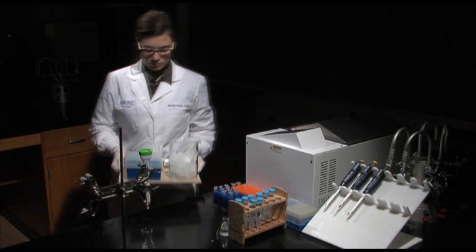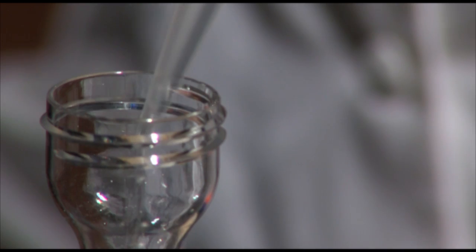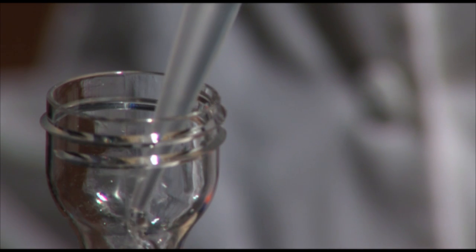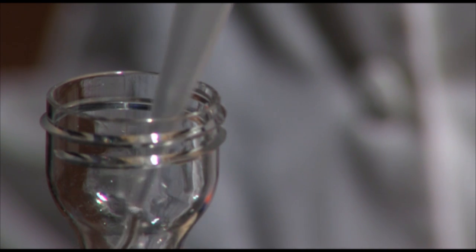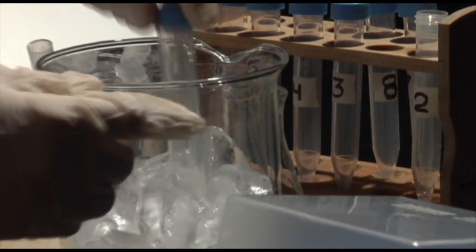Label eight tubes, one through eight. Add one milliliter of unpurified ECO-R1 solution and allow it to completely enter the column. Remove the spout cap and capture three milliliters in each of the first two tubes.